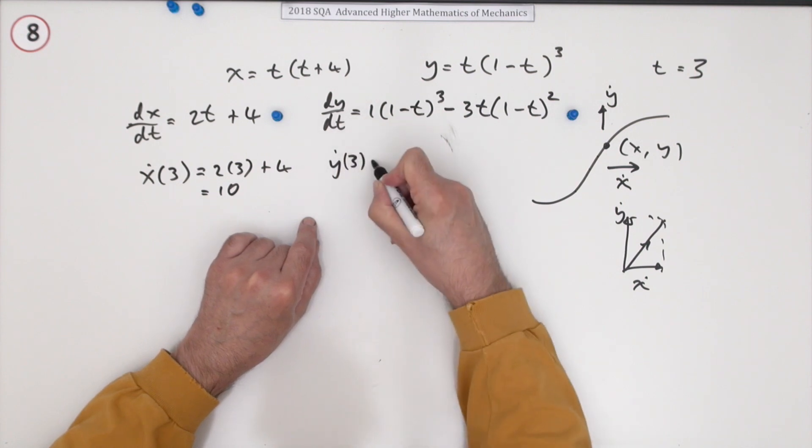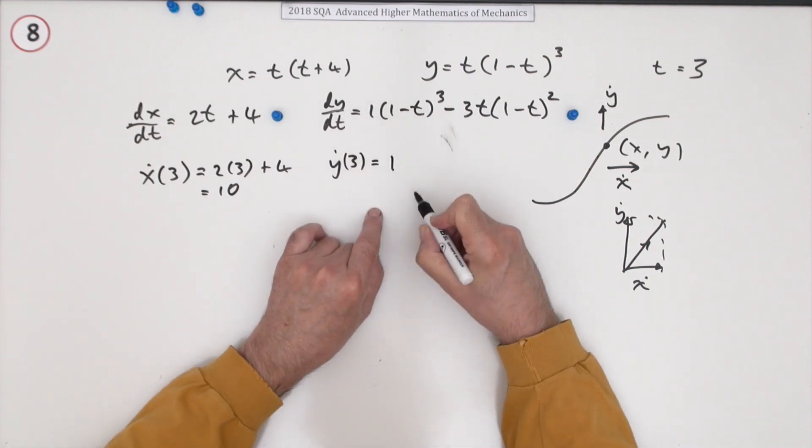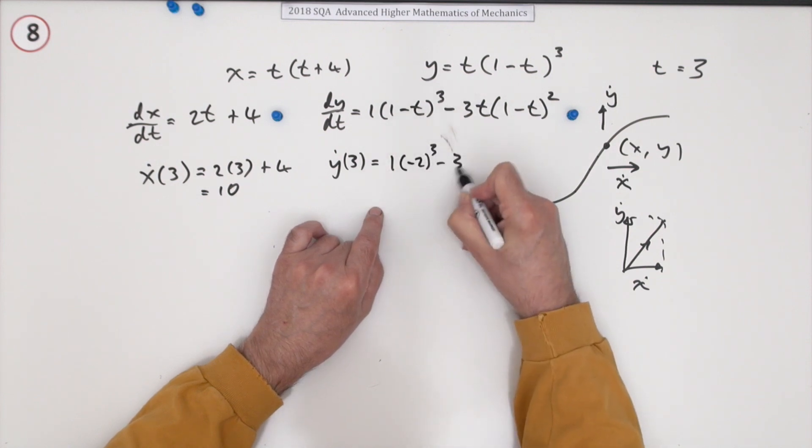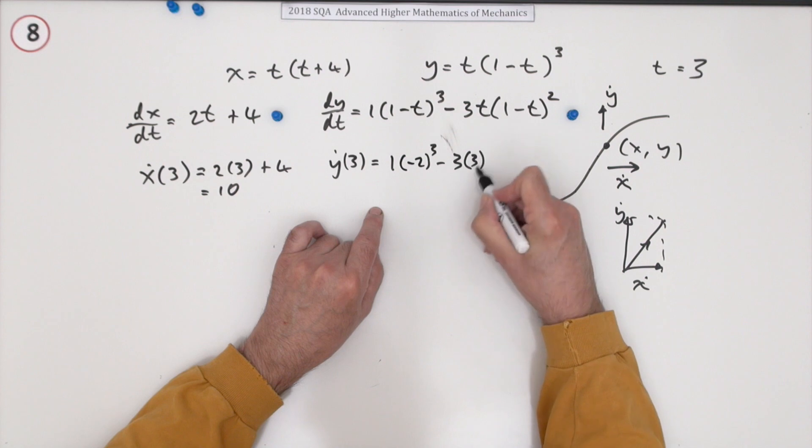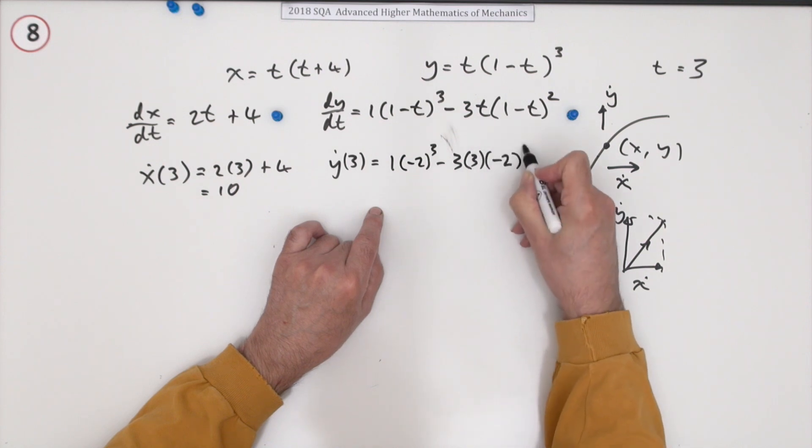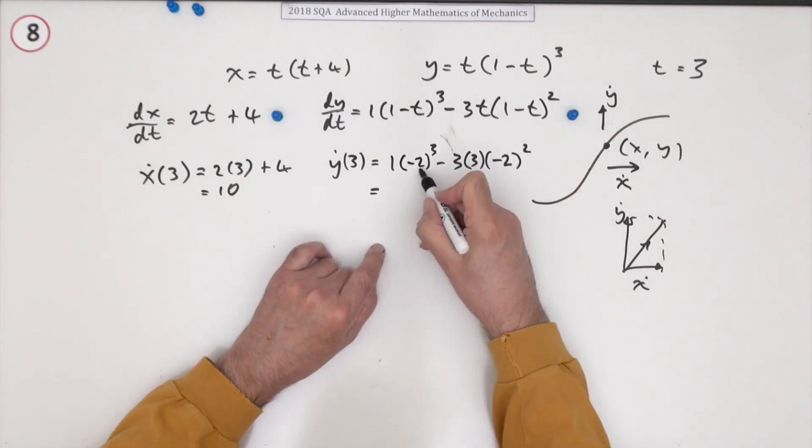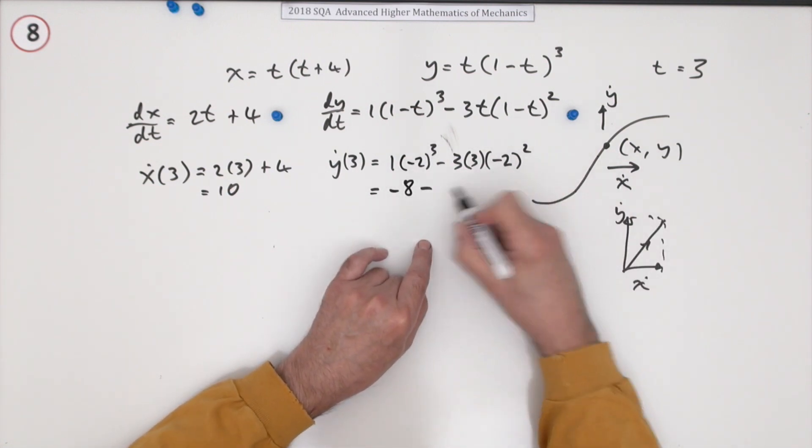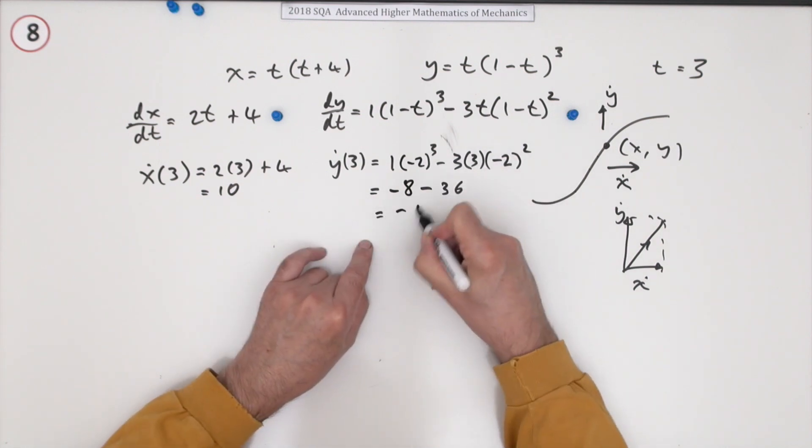y dot at 3: that's going to be 1 times, I'll just put the numbers in now, so it's t equals 3, that's negative 2 cubed, minus 3 times 3 times negative 2 squared. So that's a cube of a negative that stays negative, that goes positive but it's a minus there anyway, so that's 9 times 4 is 36, so it's minus 44. That's the next mark.